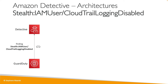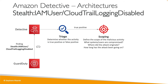From there, we can use Detective and its machine learning capability to figure out what happened and actually do a triage to determine whether this is a true positive or a false positive. Then scoping to figure out what systems are compromised, what users are compromised, where the attack is from — who disabled it and from where — and how long it has been happening.